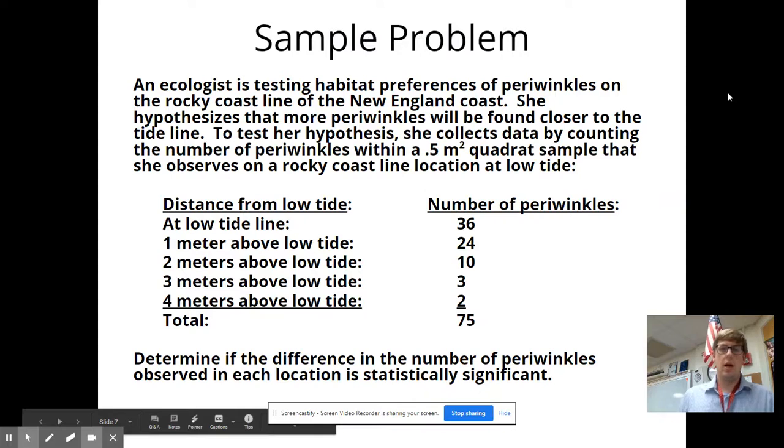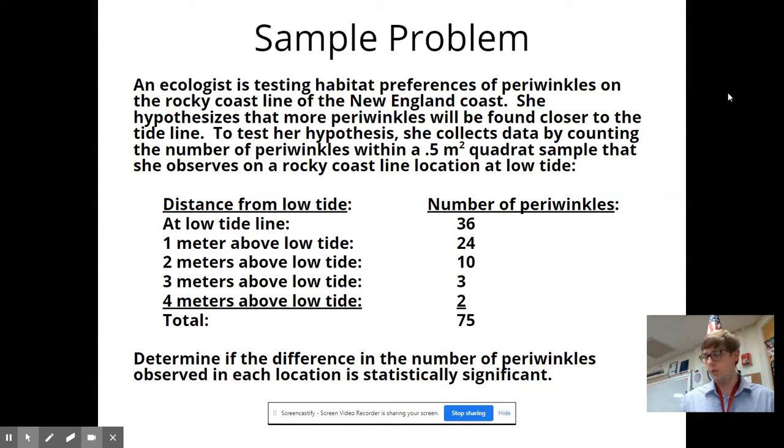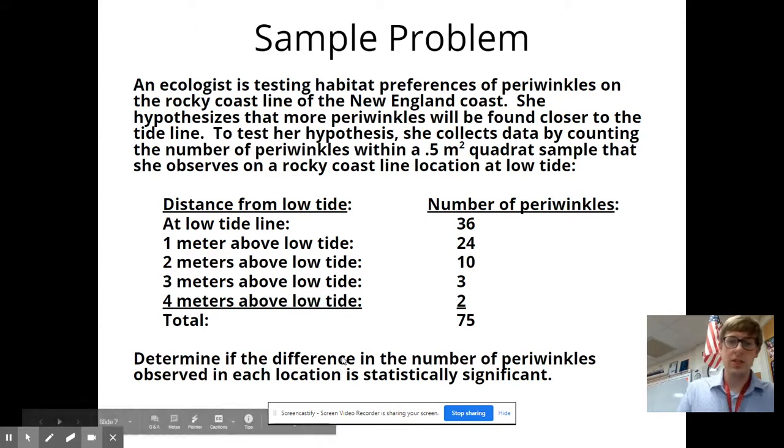Here is a sample problem that we could do, and you might get asked to do, on an exam. An ecologist is testing habitat preferences of periwinkles on the rocky coastline of the New England coast. She hypothesizes that more periwinkles will be found closer to the tide line. To test her hypothesis, she collects data by counting the number of periwinkles within a 0.5 meter squared quadrat sample that she observes on a rocky coastline location at low tide. She's taken measurements at several different locations. These are going to be your categories. At low tide line, one meter above it, two meters above it, three meters above it, four meters above it, and so on. And you want to determine if the difference in the number of periwinkles observed in each location is statistically significant, or if it's just due to chance. And chi-squared lets you do that.